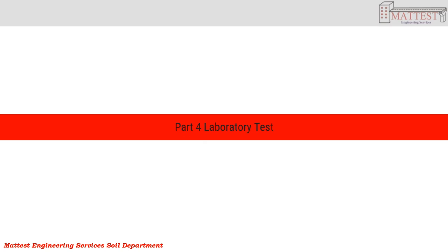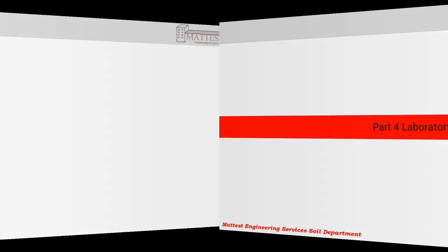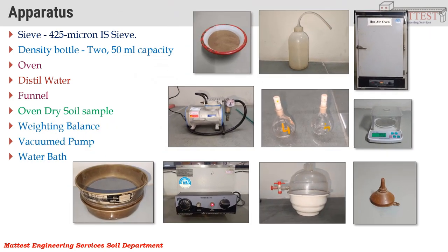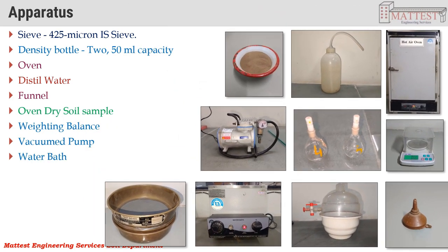The fourth part is the Laboratory Test. Apparatus required for determination of specific gravity of soil includes: IS sieve 425 micron, density bottle of 50 ml capacity, oven, distilled water, funnel, oven-dry soil sample, weighing balance, vacuum pump, and water bath.